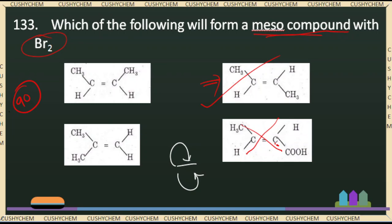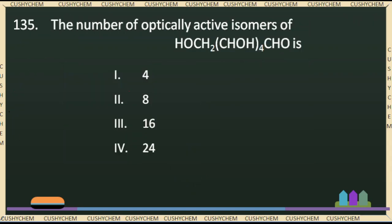The next question is: the number of optically active isomers of CH2OH(CHOH)4CH2OH.